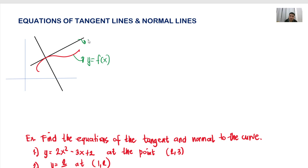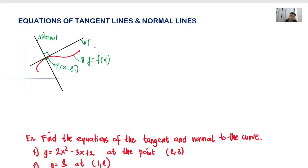The tangent line touches the graph of a function at a certain point — it only touches at one point on the graph of our function. So assuming at point x sub 1, y sub 1, there is a line that touches the graph there. That is called the tangent line. And then we also have a line that is perpendicular to that tangent line at that certain point — that is called the normal line. Since it is perpendicular, they form 90 degrees. So this is your normal and this is your tangent.